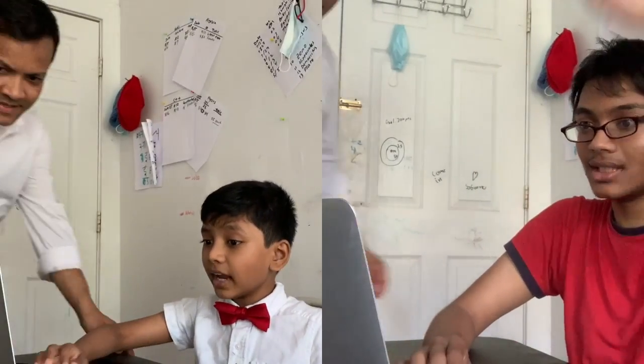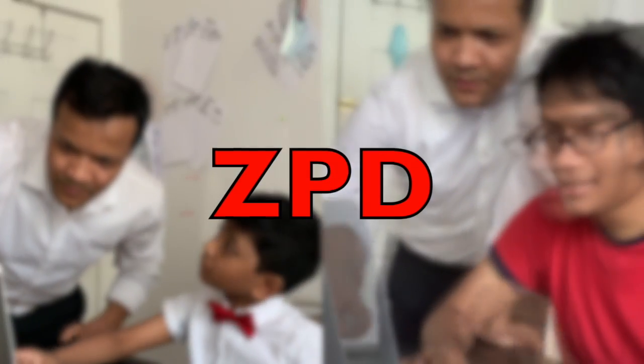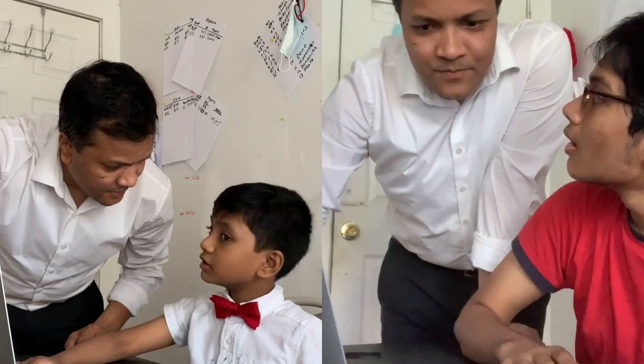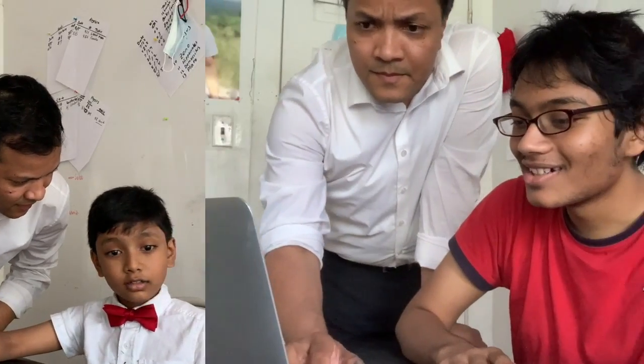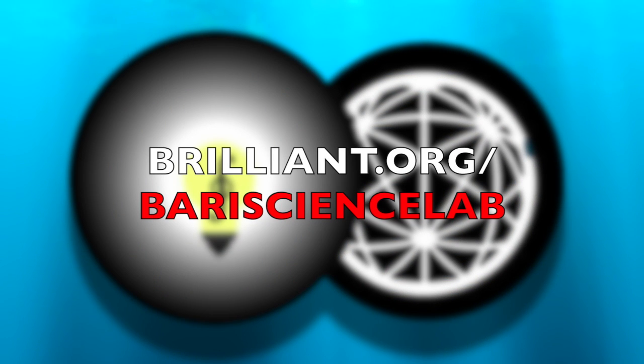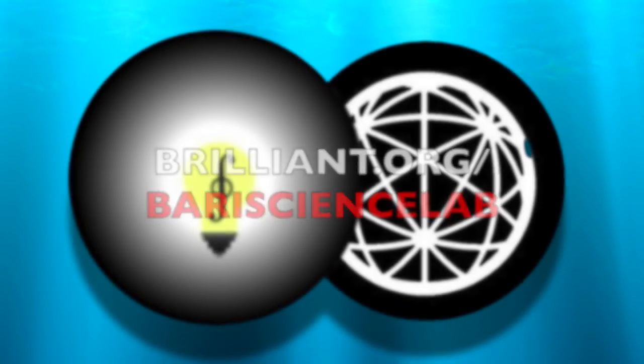Barry Science Lab and Brilliant is your MKO and will give you the scaffolding to expand your ZPD until you become the next Sir Isaac Newton or Albert Einstein. Visit brilliant.org/barrysciencelab today - the first 50 of you to use that link will get a 20% discount on the Brilliant annual subscription. Don't forget that you too can become the next Einstein, so let's fall in love with math and science.